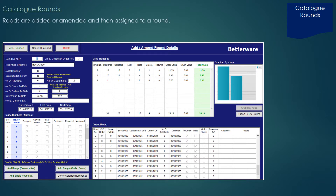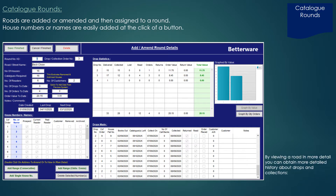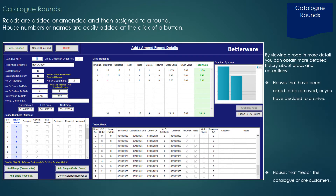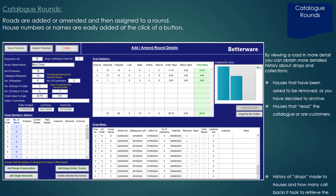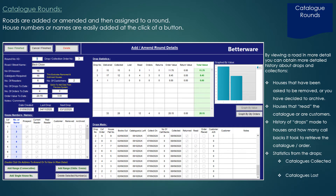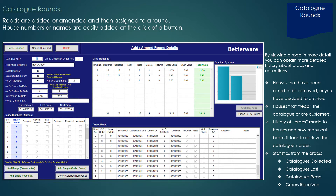Roads are added or amended and then assigned to a round. House numbers or names are easily added at the click of a button. By viewing a road in more detail you can obtain more detailed history about drops and collections — houses asked to be removed or added to archive, houses that have read the catalogue or are customers, history of drops made to houses and how many callbacks it took to retrieve the catalogue, plus statistics from the drops: catalogues collected, lost, read, and orders received.